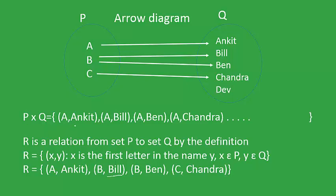As you can see, P cross Q was equal to all the elements containing the elements of P and the corresponding elements of Q. So P cross Q will have (A, Ankit), (A, Bill), (A, Ben), (A, Chandra), and so on. As you can see, the relation R is a subset of P cross Q — that is, a subset of the Cartesian product of P and Q.